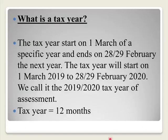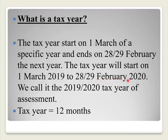We also need to understand a tax year. A tax year starts on the 1st of March of a specific year — that is for SARS — and ends on the 28th or 29th of February of the following year. I say 28th or 29th because every four years we have a leap year and then there are 29 days in February. For example, the tax year runs from 1 March 2019 to 28/29 February 2020 — we call this the 2019-2020 tax year of assessment. Remember: a tax year equals 12 months.